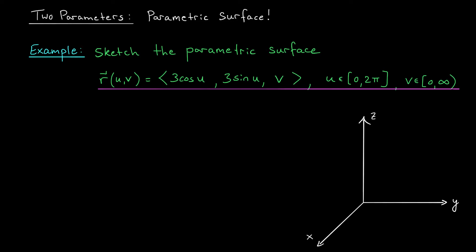I want to sketch the parametric surface given by R of U, V equals 3 cos U, 3 sine U, V with U ranging between 0 and 2π and V ranging between 0 and infinity.